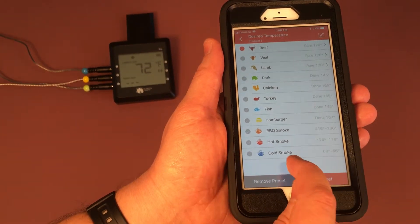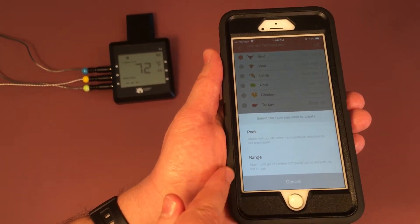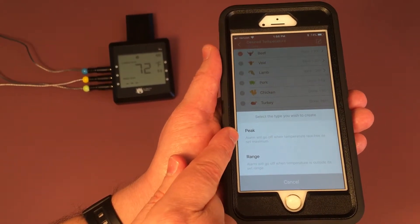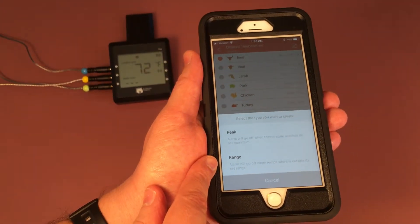And down here you can also create your own preset. You have two different versions: the peak and the range. The peak will alarm once you get to a certain meat temperature, or the range will alarm if you get outside of a certain temperature area.